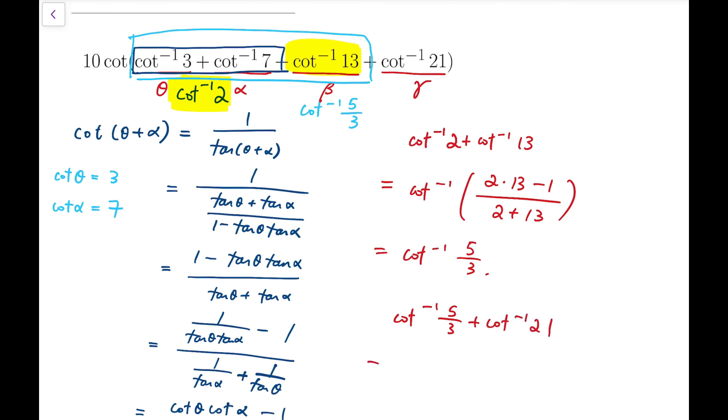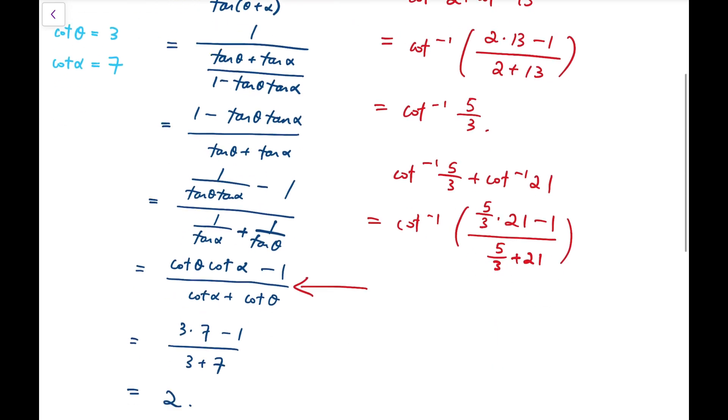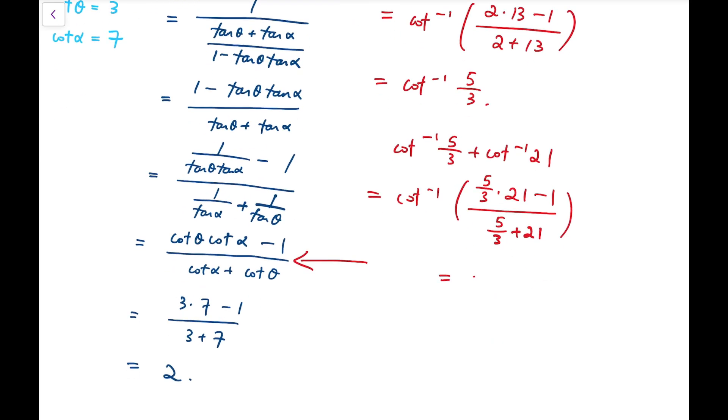and say that it's arccot tangent of 5 over 3 times 21 minus 1, all divided by 5 over 3 plus 21. And that's equal to arccot tangent of 34 divided by 68 over 3.